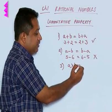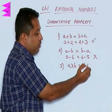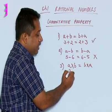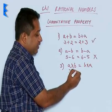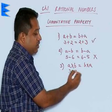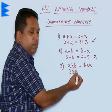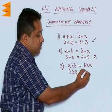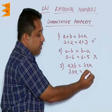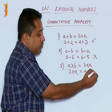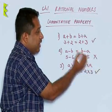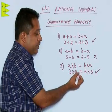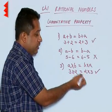What about the case of multiplication? Is A into B the same as B into A? When we multiply two numbers, let us say 3 into 2, does the order matter? 3 into 2 gives you 6, and 2 into 3 also gives you 6. So, the commutative property is true in case of multiplication.